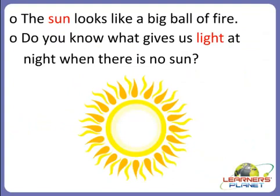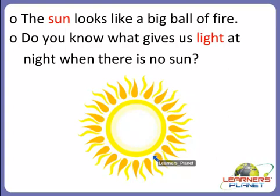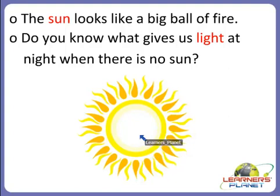You must be knowing about the sun. How does the sun look? See in the picture — the sun looks like a big ball of fire. It gives us light, and the sun helps us to see the world around us. We can say that the sun helps us to see during the daytime.